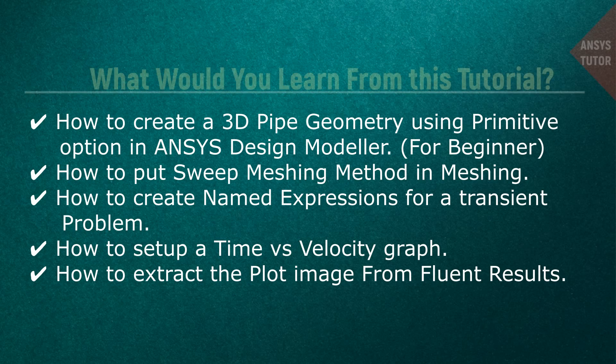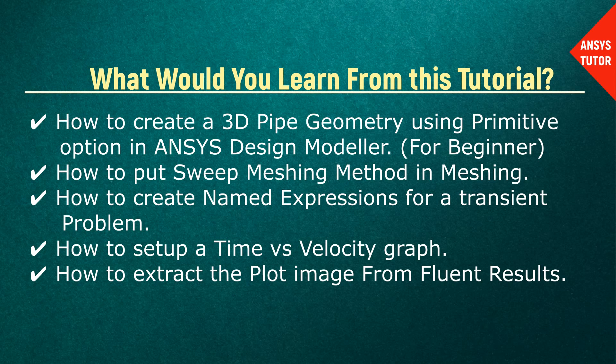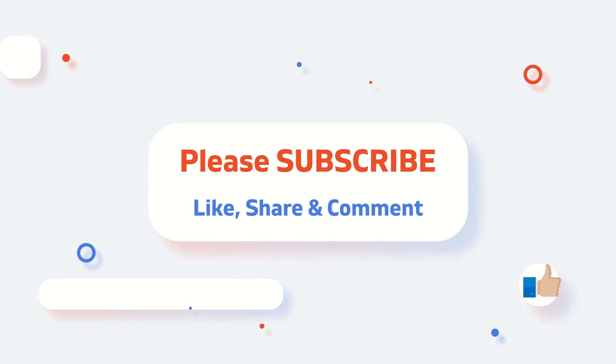Before proceeding, let's know what you would learn from this tutorial. If you are a beginner, you would learn how to create a 3D pipe geometry using the primitive option in the ANSYS Design Modeler. In meshing, you would see how to use the sweep meshing method. In the Fluent setup, we would see how to create named expressions for a transient pipe flow problem, set up the flow time versus velocity average graph, and save the image file of the graph.